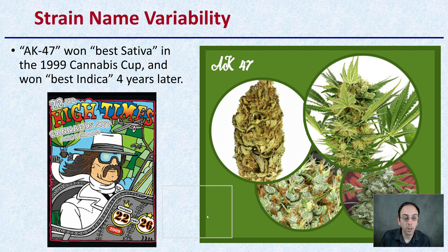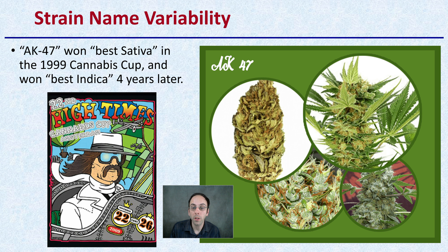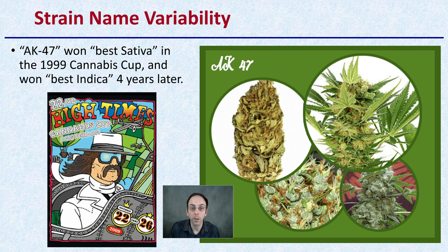Getting into strain name variability: AK-47 won best sativa at the 1999 Cannabis Cup, and then won best indica four years later. So even in the High Times Cannabis Cup, a single strain won best sativa and then four years later won best indica. This kind of helps prove that the reliability of these strains is not really that great.